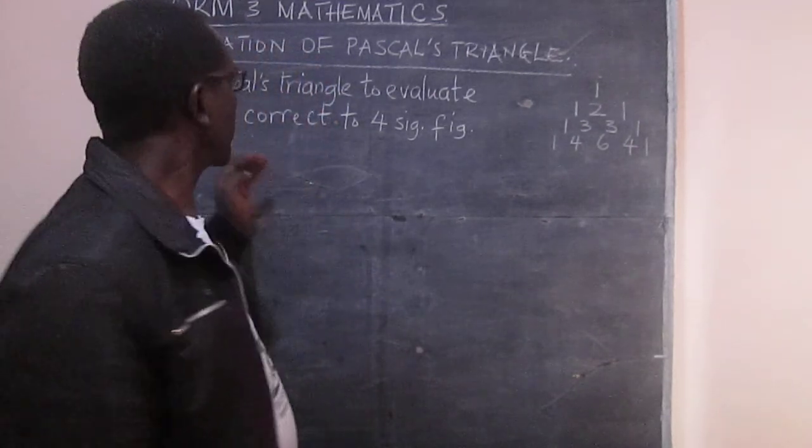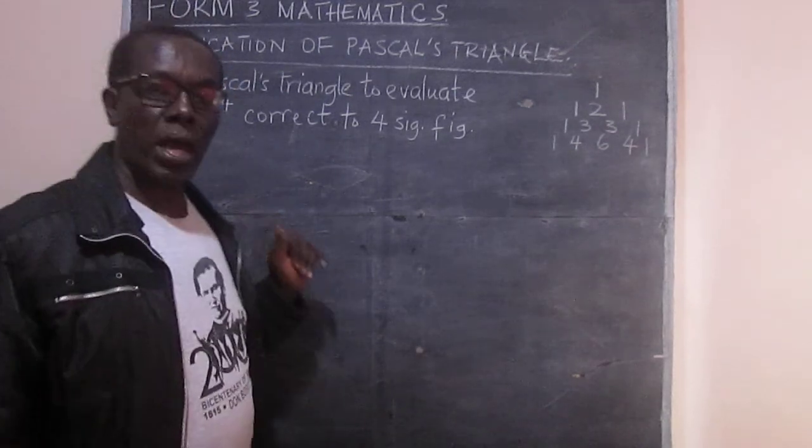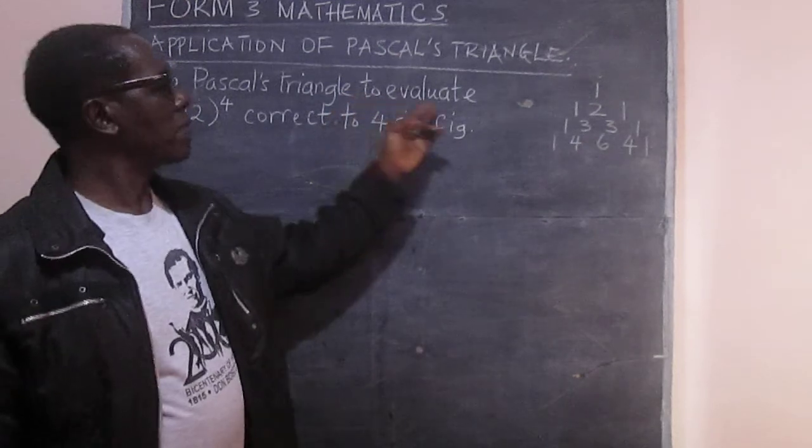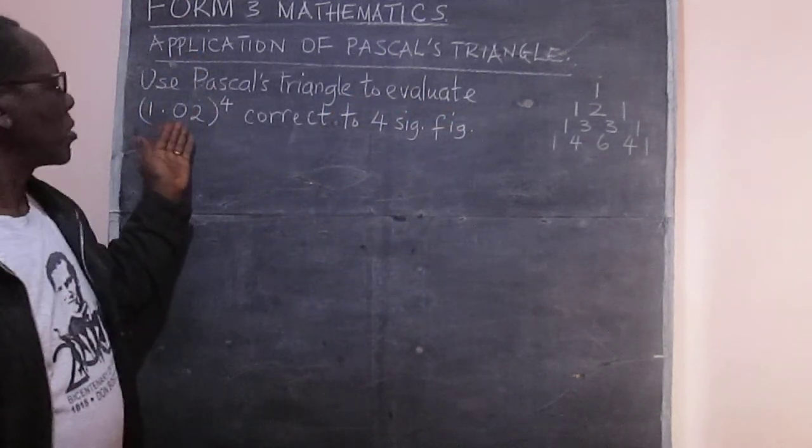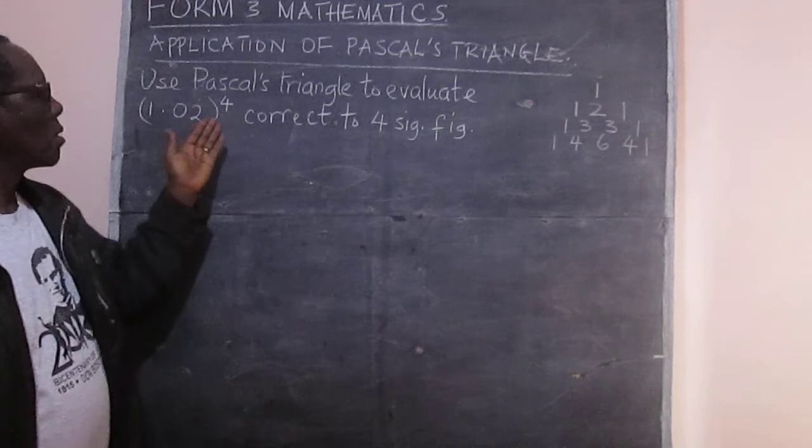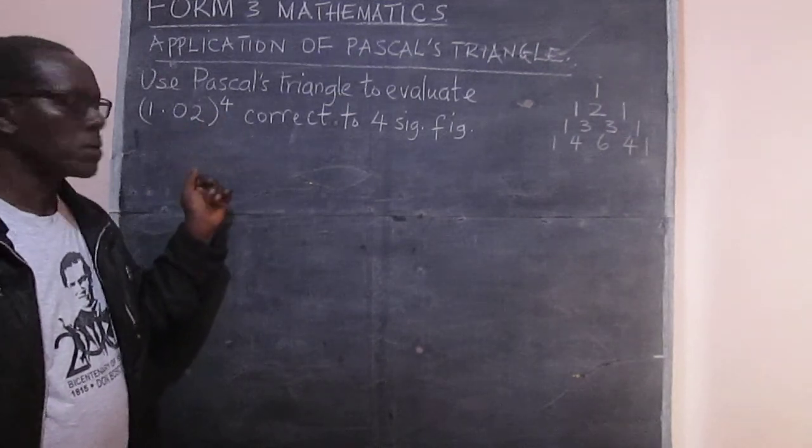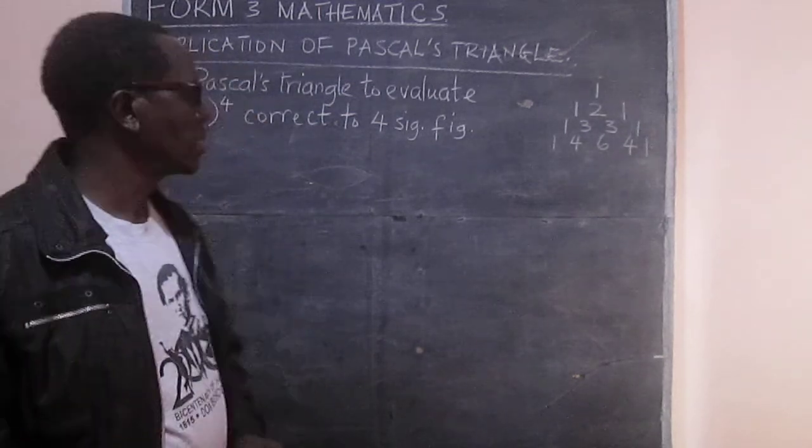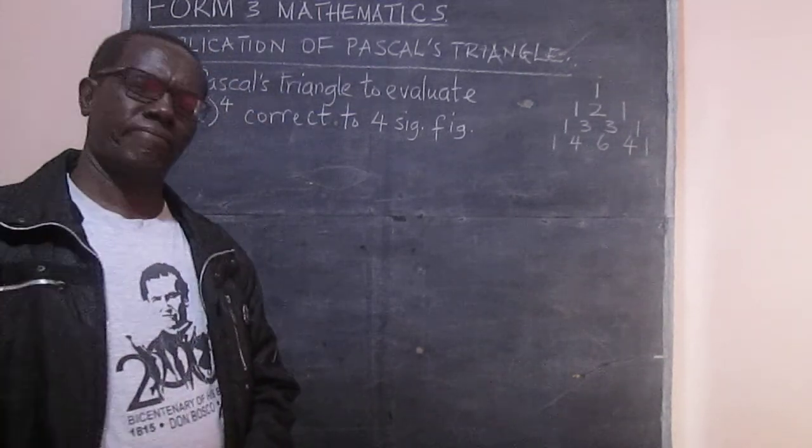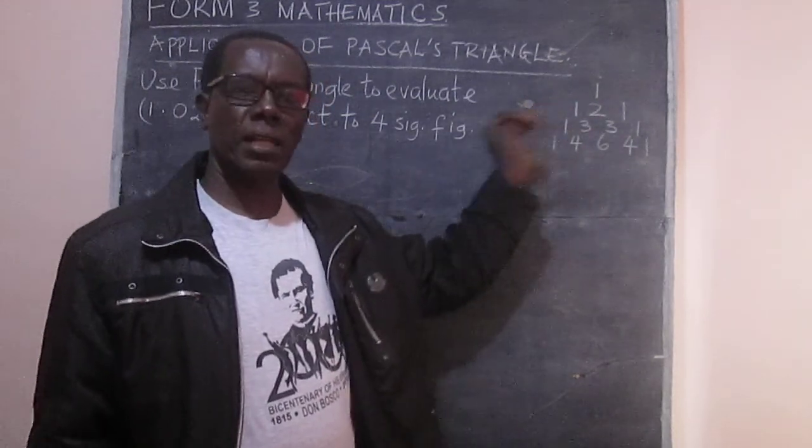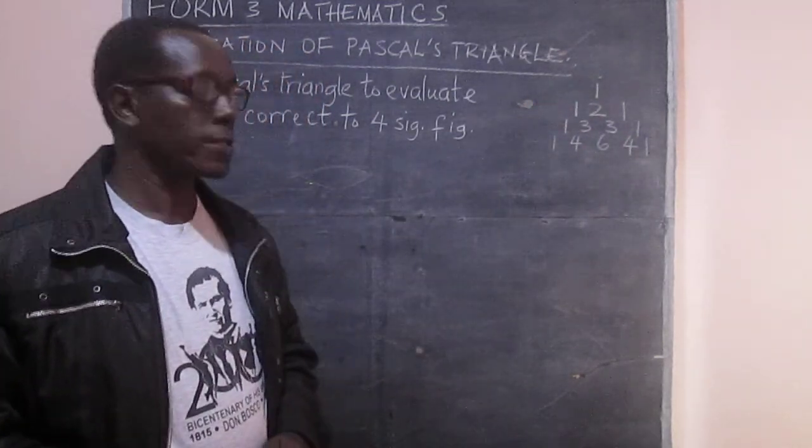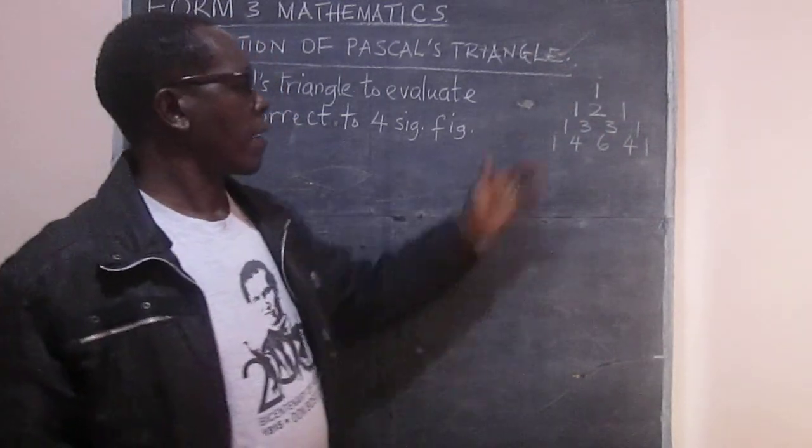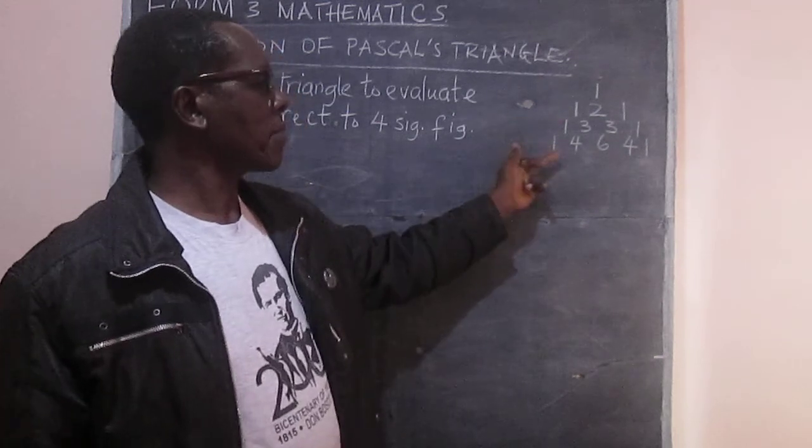Like in the example I've given here, we are required to use Pascal's triangle to evaluate 1.02 raised to the power of 4, correct to 4 significant figures. So we need to use what we had in our last lesson. We had Pascal's triangle for power 2, power 3, power 4.